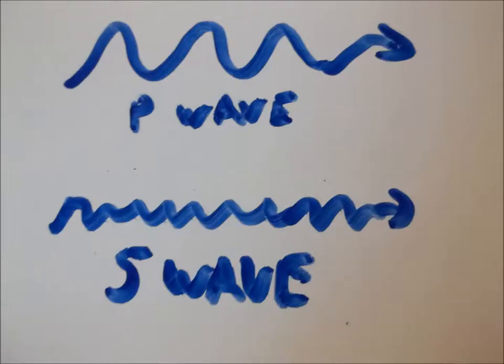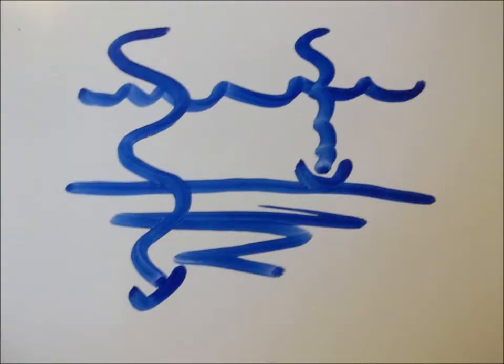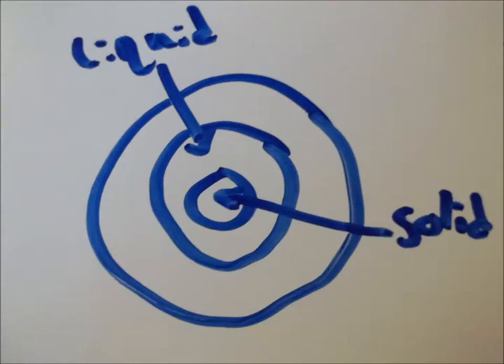To do this, she measured P-waves and S-waves, which travel from within the Earth as earthquakes occur. Because P-waves can travel through solids and liquids, while S-waves can only travel through solids, Lehmann theorized that the Earth has a liquid outer core and a solid inner core.